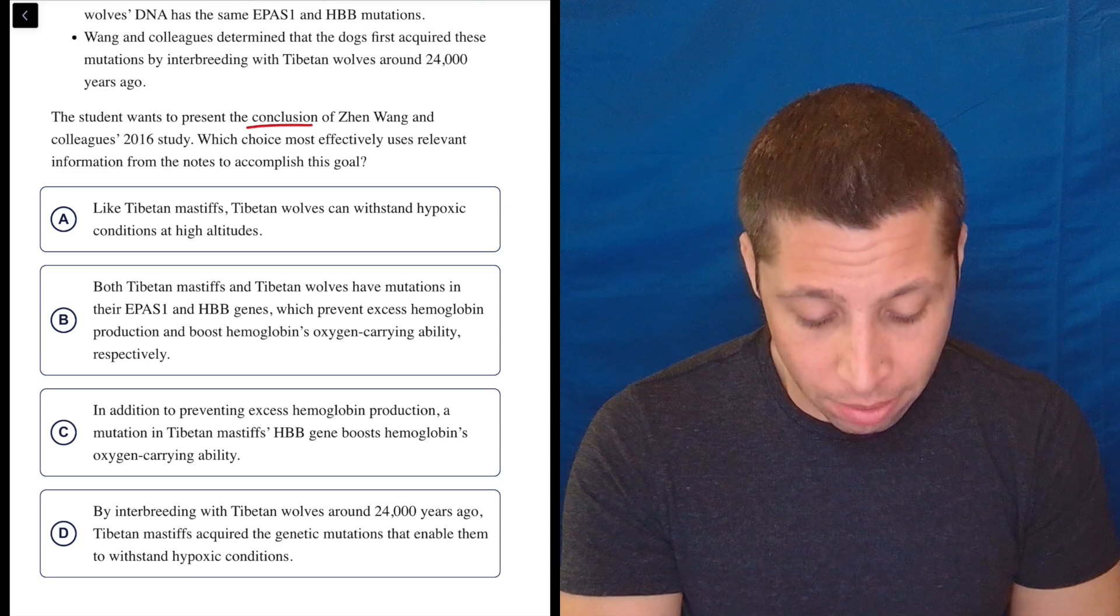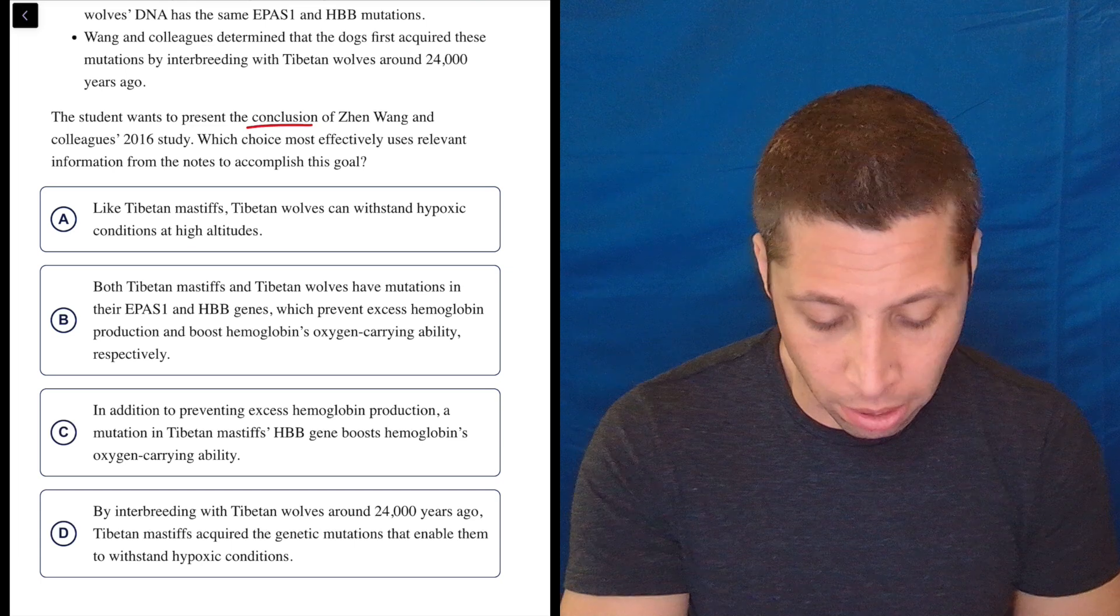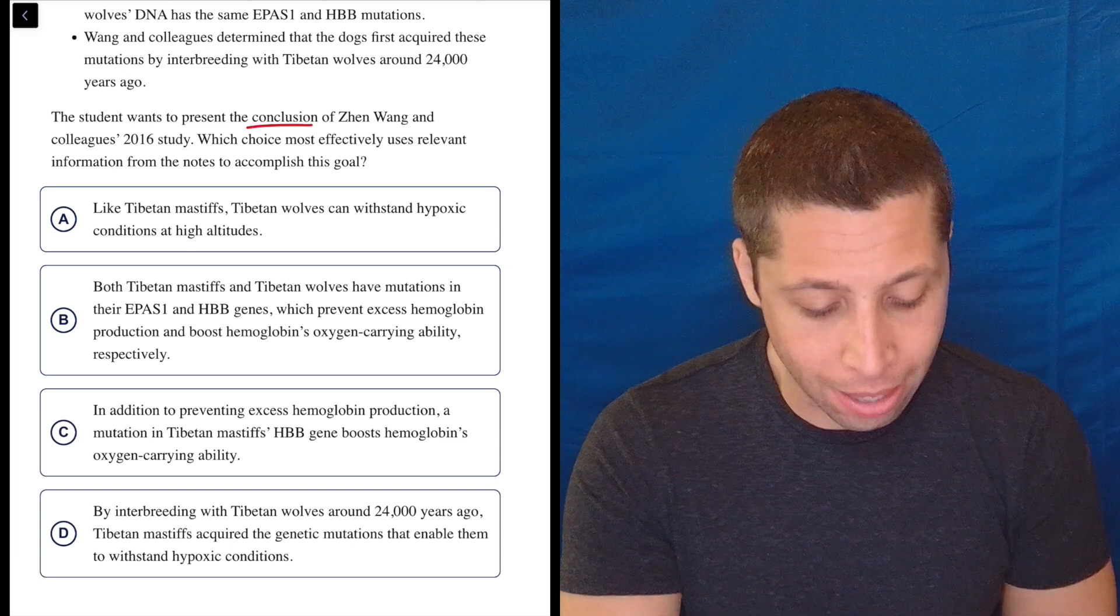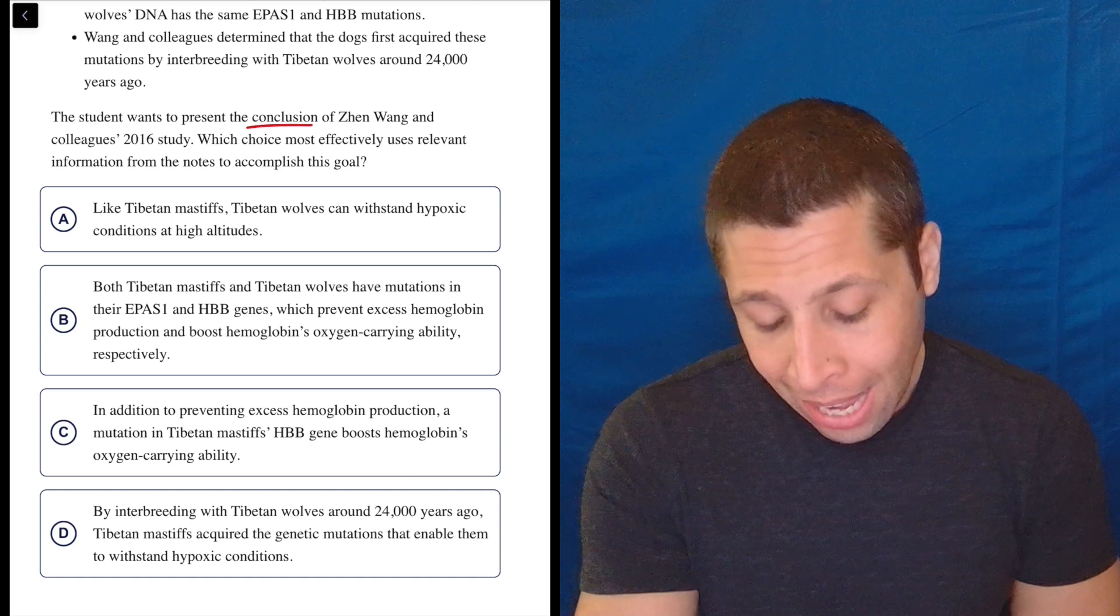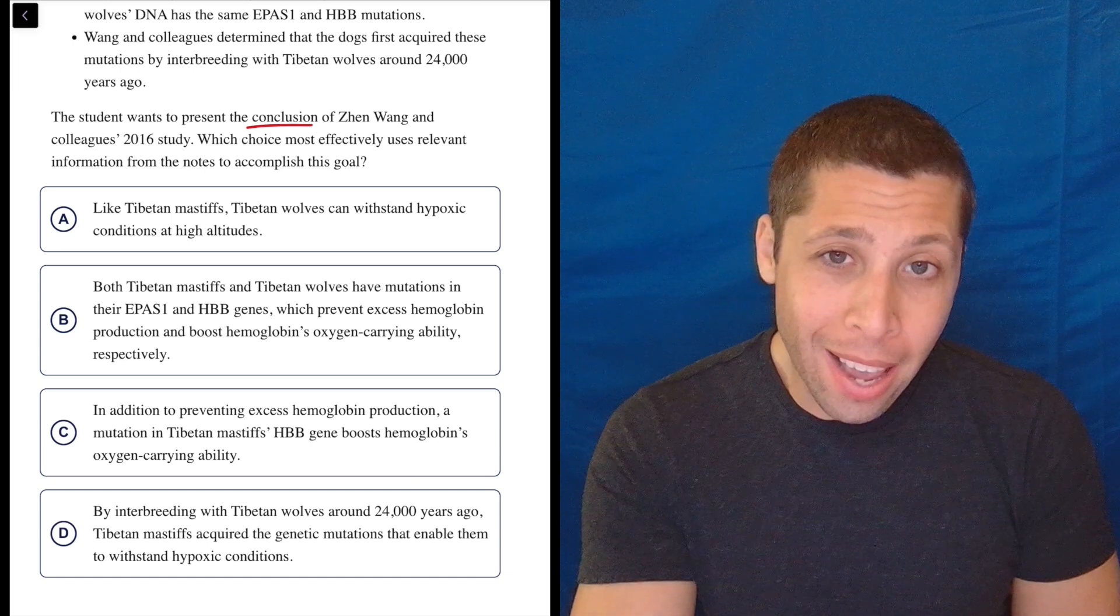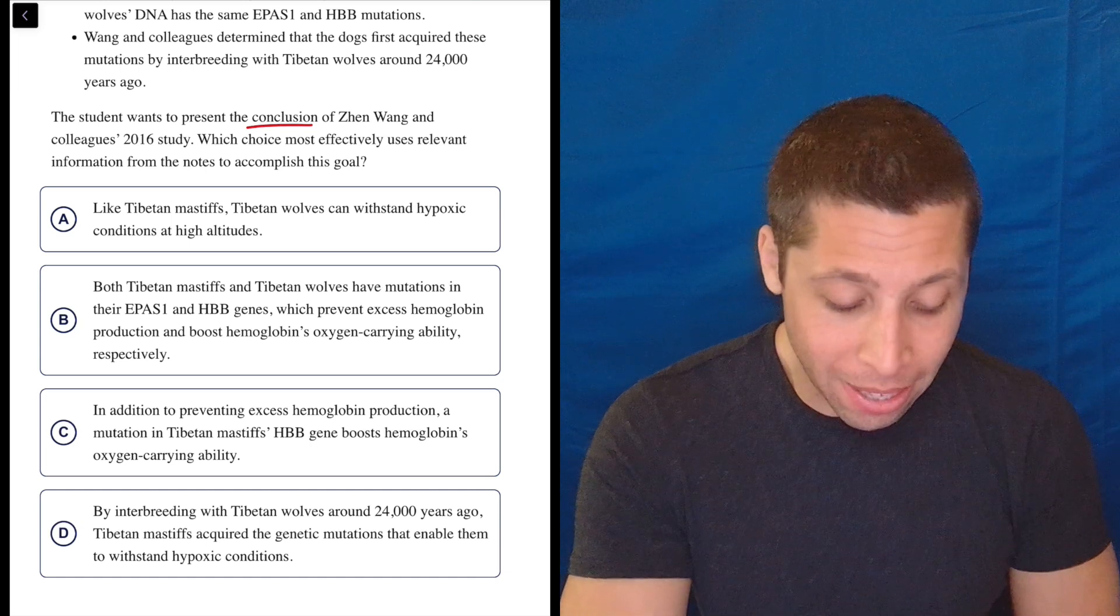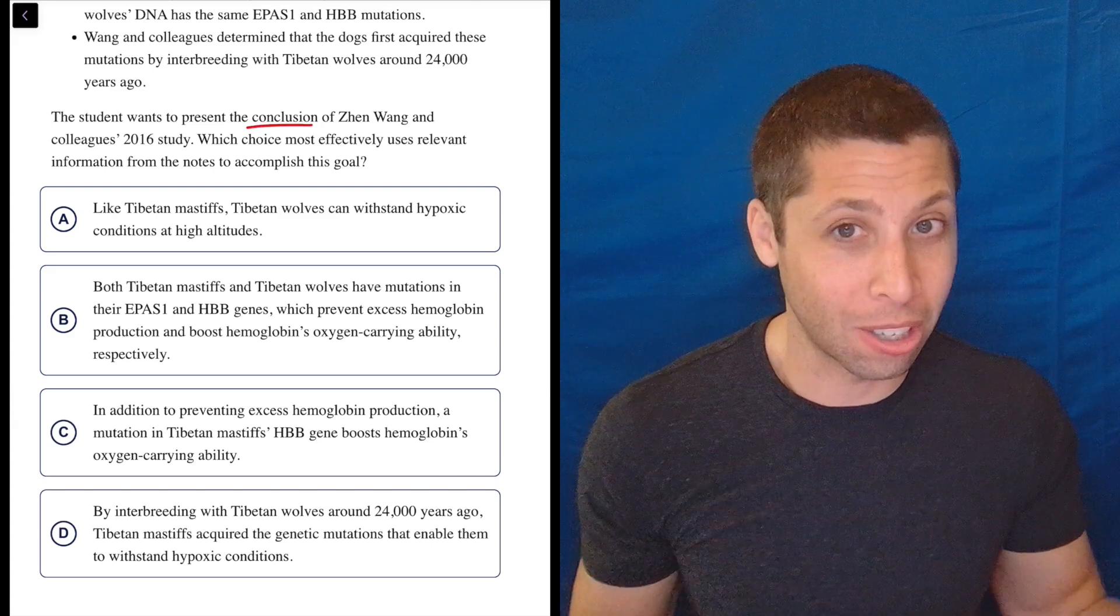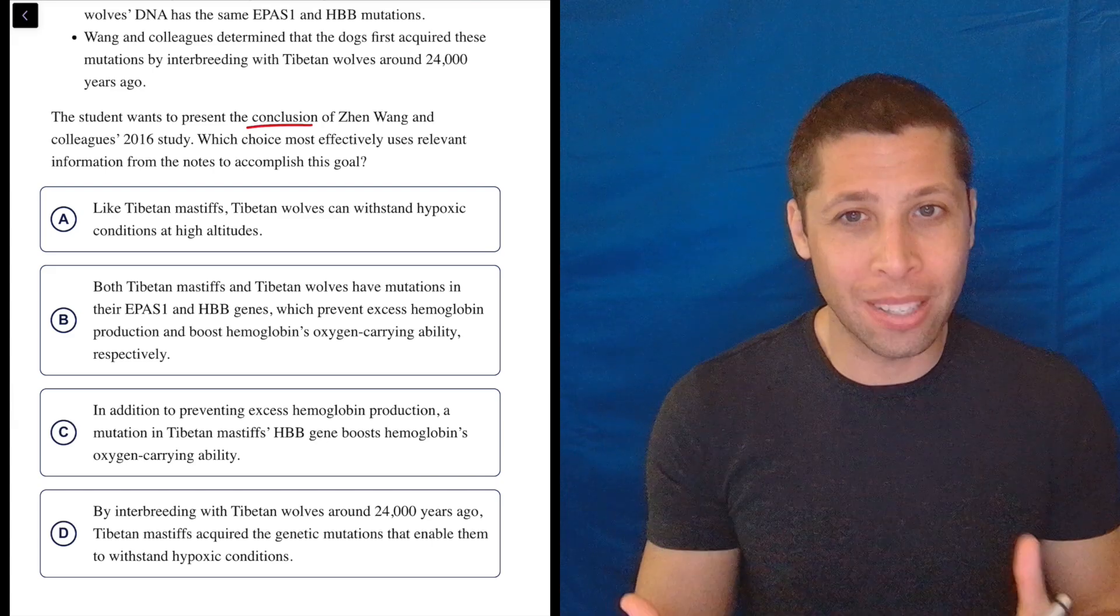B, both Tibetan Mastiffs and Tibetan wolves have mutations in their genes, which prevent excess hemoglobin production and boost hemoglobin's oxygen-carrying ability, respectively. Again, this could be a conclusion. I'd love for them to just say that. Is this a fact that they used to do this study or is this the conclusion of the study? I don't know. It's not being presented as such.